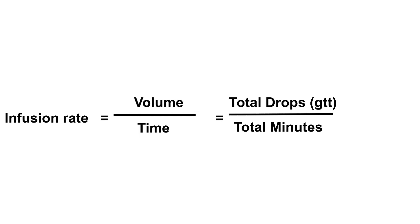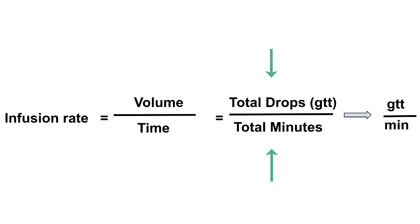Now recall that calculating the total volume in drops is important because we want to identify the appropriate rate of drops per minute. That is, if we know the total number of drops in the bag and we know the infusion time in minutes, we can write this as a ratio, perform the division, and arrive at a rate in drops per minute.